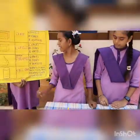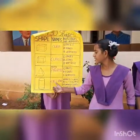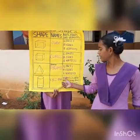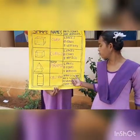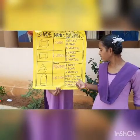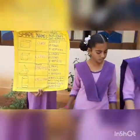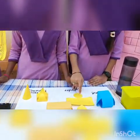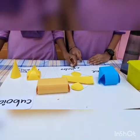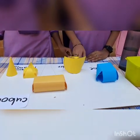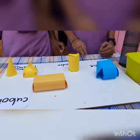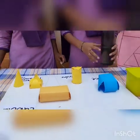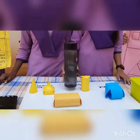And next one is cylinder. Cylinder has 3 faces: 2 flat faces and 1 curved face. Counting the faces: 1, 2, 3 faces. This is the 3D picture of cylinder. This is the example for cylinder.